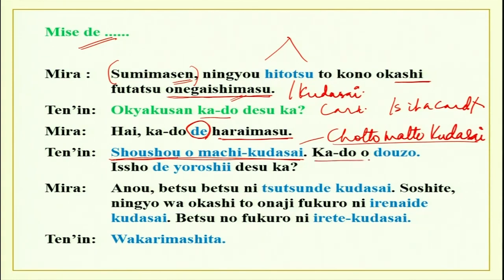Kado wo dozo. What does this mean? This is a continuation because she has said kado de haraimasu — 'I will pay by card' — and probably she has given her card. He does all the payments and then he is returning the card. Kado wo dozo. Dozo is actually giving permission to somebody. The literal meaning of dozo is giving permission to someone. But dozo depends on situation — here, somebody is giving the card to you and asking you to kindly take it. Please take your card.